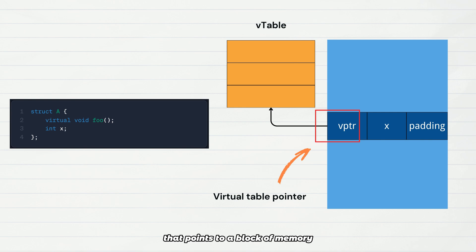A virtual table pointer is essentially a pointer that points to a block of memory called the vtable, a table of function addresses which is typically stored in the read-only data section. The 4-byte padding at the end exists to satisfy memory alignment rules. On 64-bit systems, object sizes are usually multiples of 8, which avoids performance overhead when the CPU reads memory.